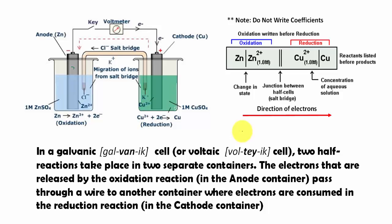In this video, we are going to learn about galvanic cells and voltaic cells. Basically, it is two half reactions that take place in two separate containers. The electrons that are released by the oxidation reaction in one of the containers, specifically we call that container an anode container.